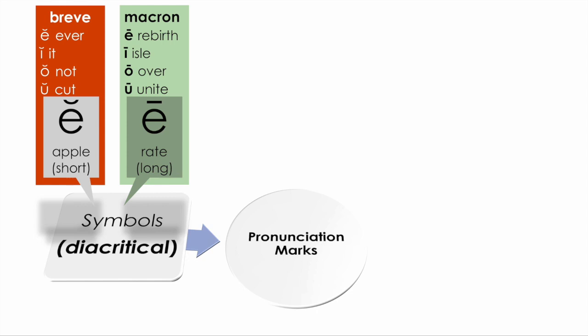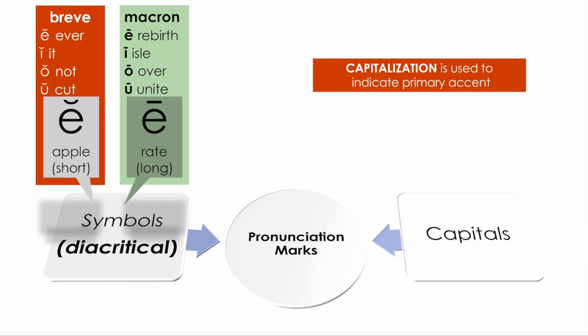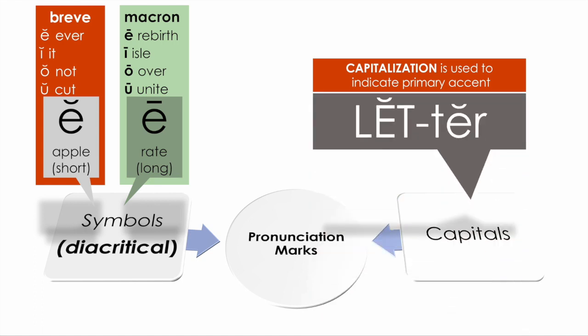The other pronunciation mark is capital letters, or capitalization, which is used for showing the primary accent. For example, the pronunciation of the word 'letter' indicates that the emphasis should be placed on the first syllable — 'LET-ter' — so you go a little more lightly over the second syllable.